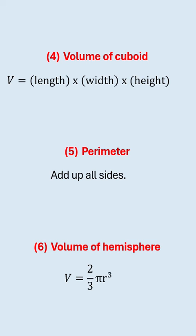Volume of a cuboid is length multiplied by width multiplied by height. To get the perimeter, you add up all the sides. And volume of a hemisphere is given as two thirds times pi times radius cubed.